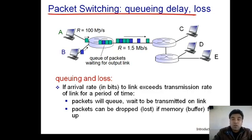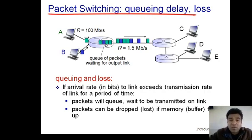When the arrival rate exceeds the transmission rate, the router accumulates those packets into its buffer, which forms a queue. The time a packet spends waiting in that queue is called queuing delay. For example, consider the first packet to be transmitted on a link.